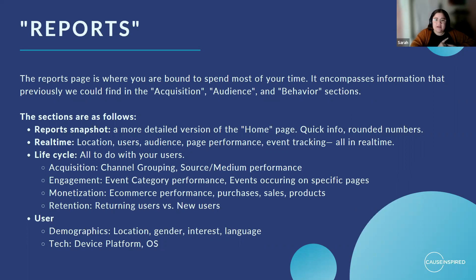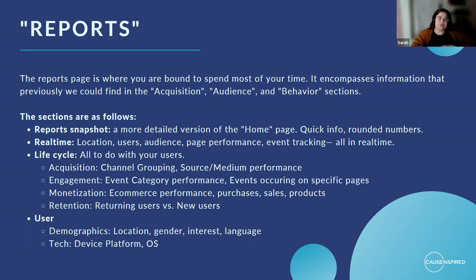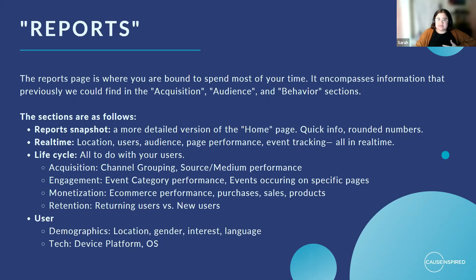This is really where you're going to get information on real-time performance — where your audience is located in real time, when they're coming to your site. This is also where you're going to get snapshot information, kind of like a more improved version of a homepage. It's also where you're going to see the life cycle of your users: how you acquired them to your site, how they are engaging with your content, if they're completing events and what kind, how many times they've completed them. You'll also see e-commerce performance — how many purchases have been made, those transactions — and information on retention: are you retaining your users? Are you bringing in return users or new users? You're also getting a lot of information on your users: demographic info, location, gender, interests, language, and tech information — what kind of devices they're using, what operating systems.